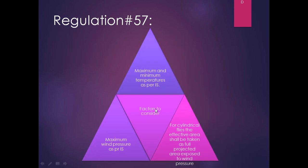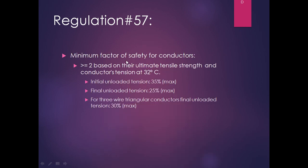When calculating the factor of safety, we have to consider: first, maximum and minimum temperatures as per Indian standard; second, maximum wind pressure as per Indian standard; third, for cylindrical members, the effective area shall be taken as full projected area exposed to the wind pressure. Minimum factor of safety for conductor shall not be less than 2, based on ultimate tensile strength and conductor tension at 32 degrees Celsius with no external load. Initial unloaded tension shall not be more than 35 percent; final unloaded tension shall not be more than 25 percent. However, if a 3-hour triangular conductor is used, final unloaded tension can be up to 30 percent.